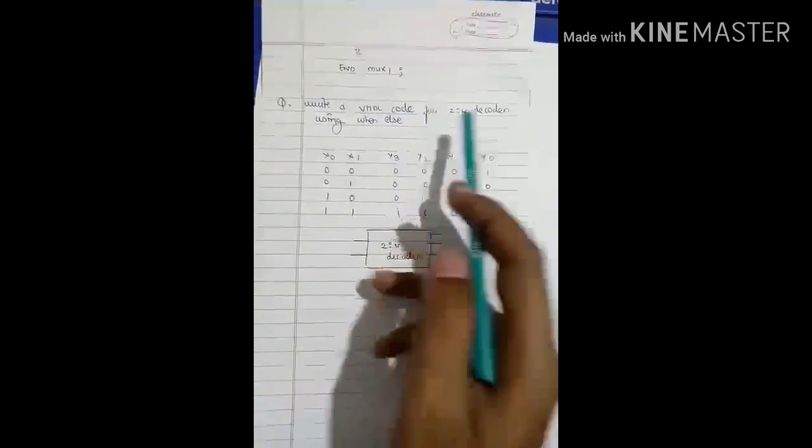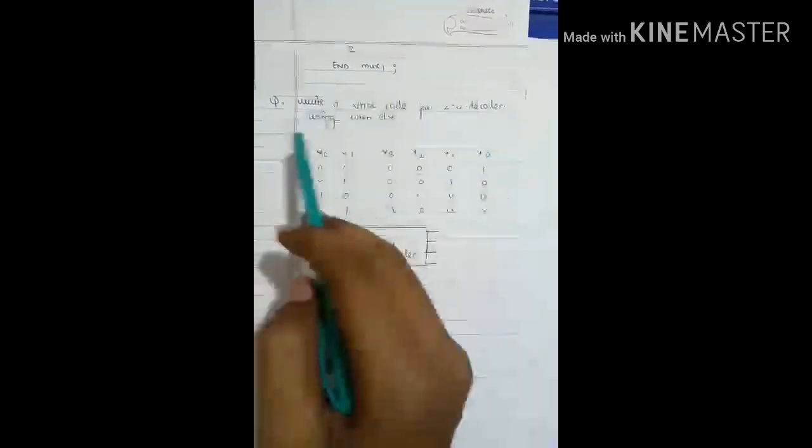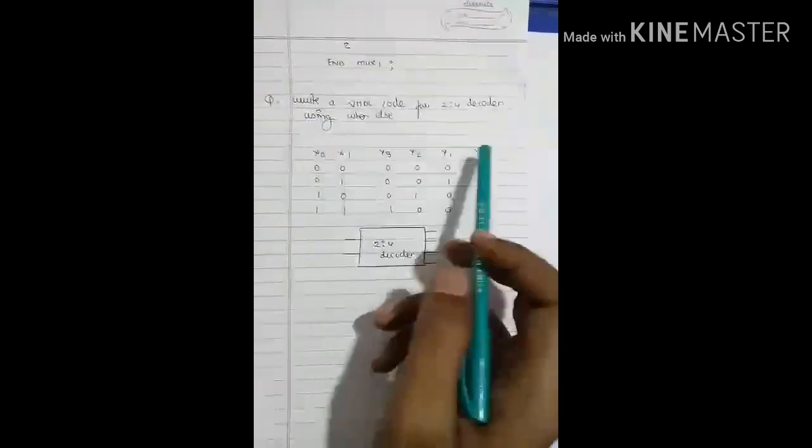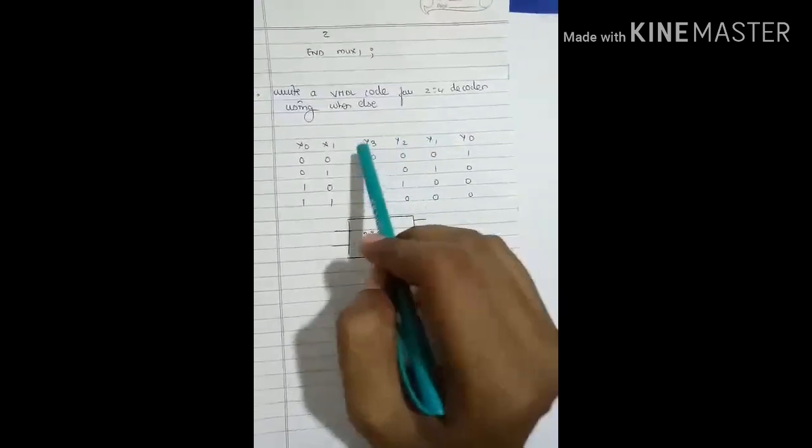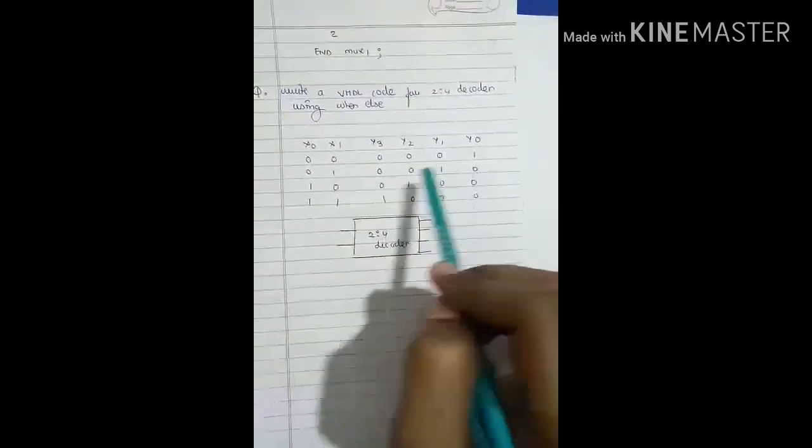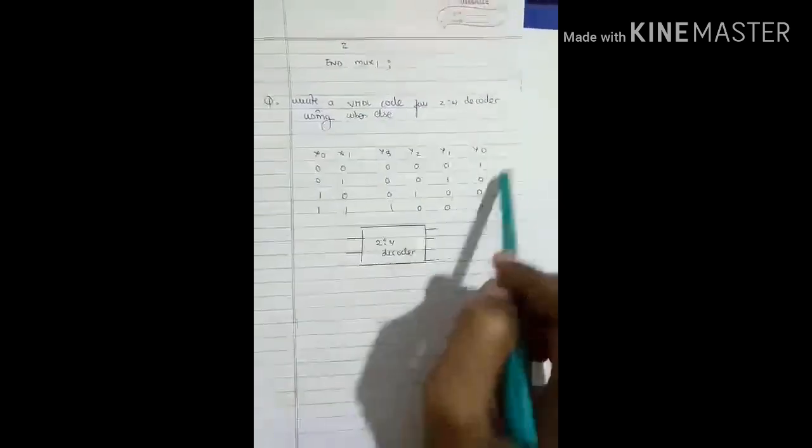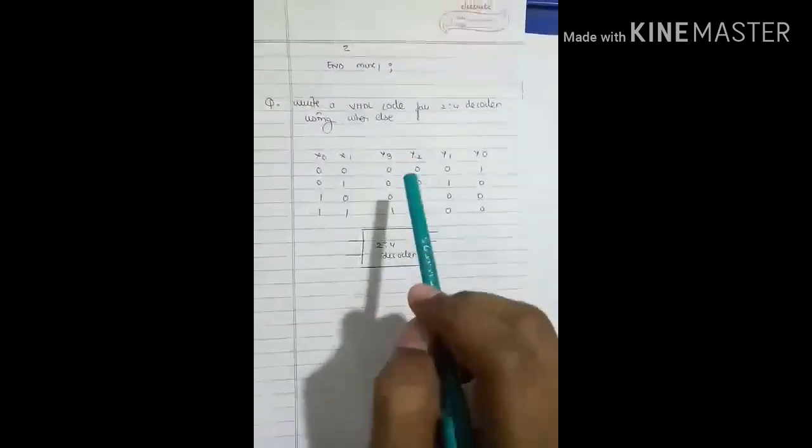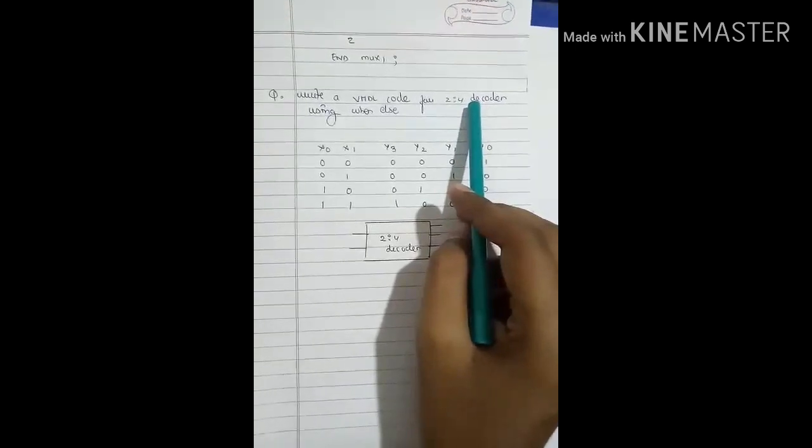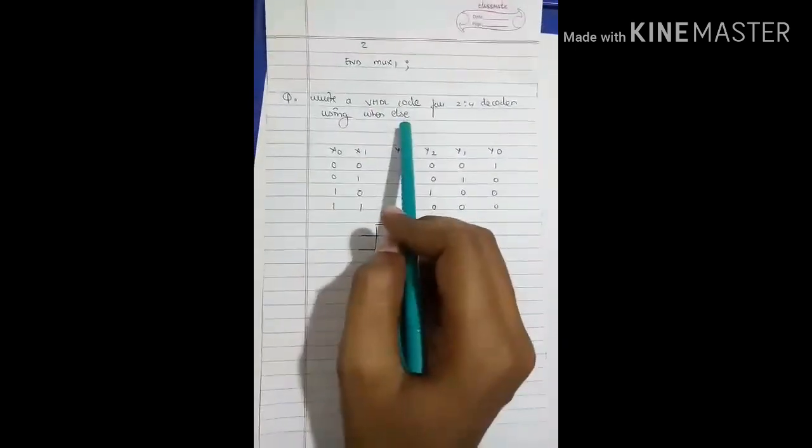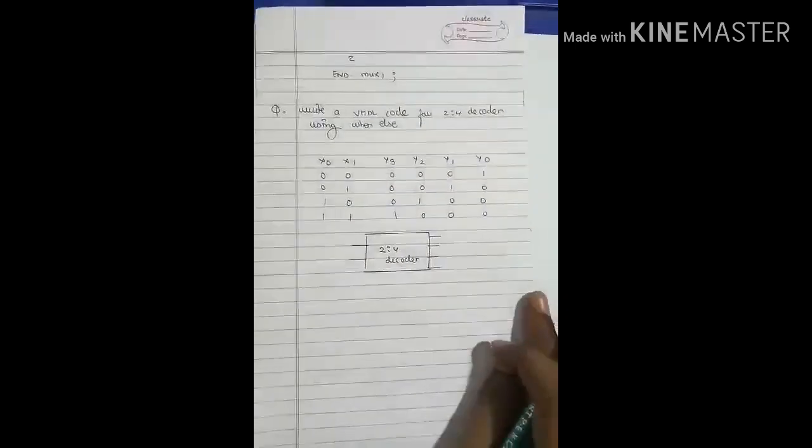Write a VHDL code for 2-to-4 decoder using when-else. Here the truth table is given as X0, X1: 00, 01, 10, 11, where the outputs are Y0, Y1, Y2, Y3. You need to write according to this truth table the VHDL code for 2-to-4 decoder using when-else statement. Try it and comment in the comment box if you have any queries.